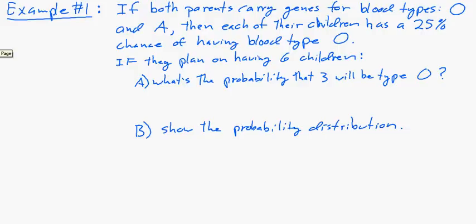The first one being this: Two parents carrying genes for type O and A blood. Each of their children has a 25% chance of being type O, because that's the recessive. If they plan on having six children, what's the probability that three will be type O? And also, let's just show the whole probability distribution.